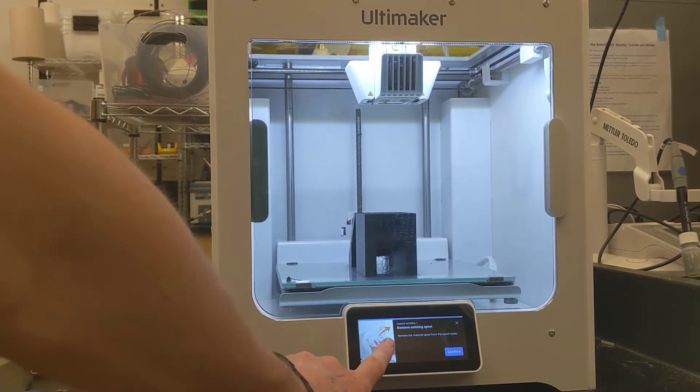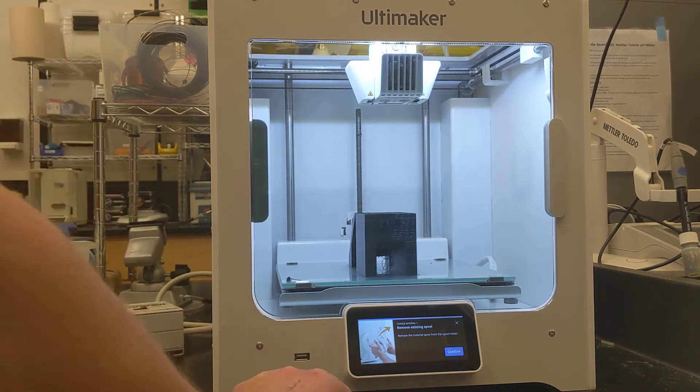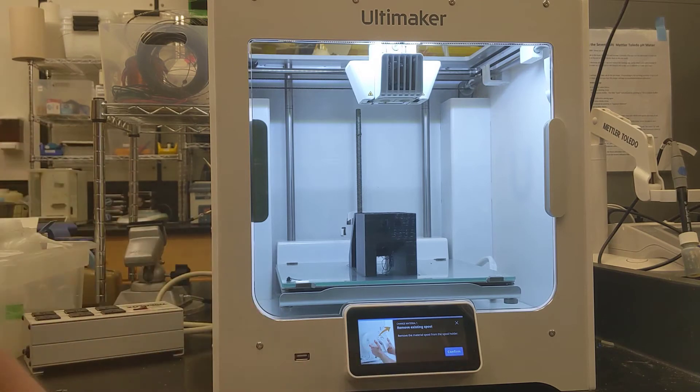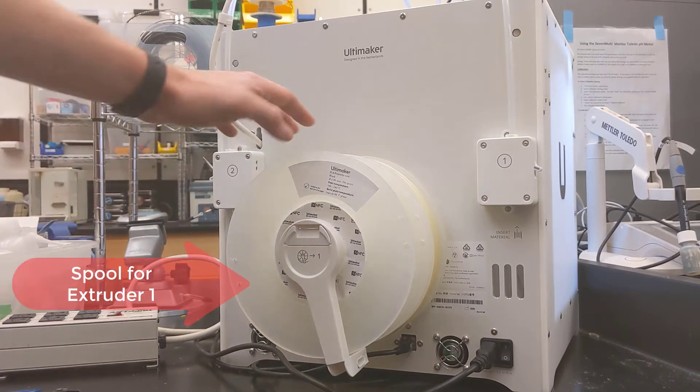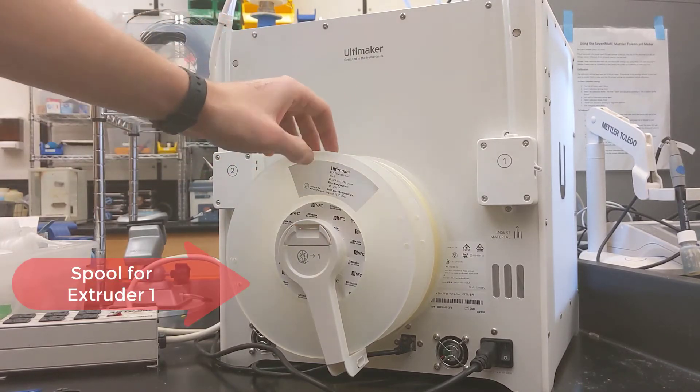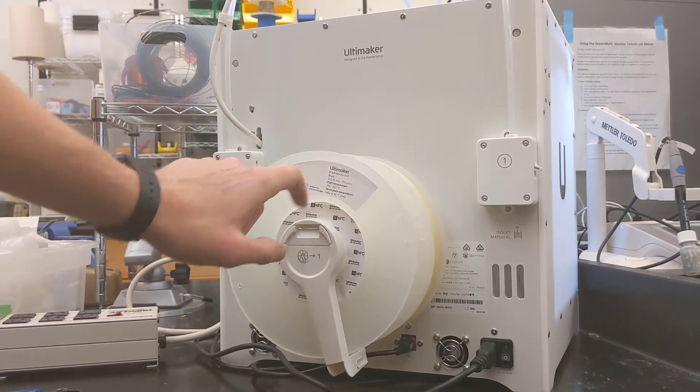So the display now is prompting us that says remove existing spool. So remove the material spool from the spool holder, and it gives me a button that says confirm. So I need to remove the spool and then I'll confirm that. So this is the rear of the machine. You can see there's two spools back here. The one in the rear is almost always outfitted with PLA. This had black PLA, it's empty.